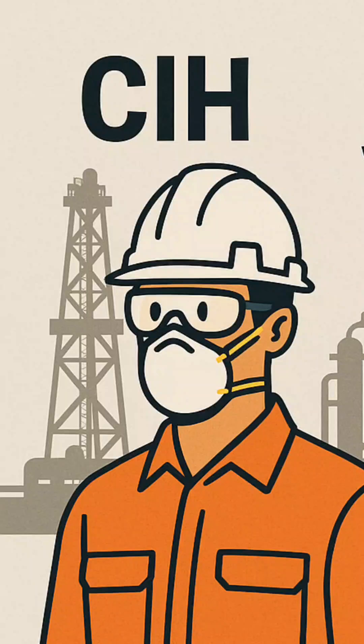Let's break down the difference between CIH, Certified Industrial Hygienist, and CSP, Certified Safety Professional, in a clear, narrative format. 1. Core Focus. CIH, Certified Industrial Hygienist, focuses on health hazards in the workplace.